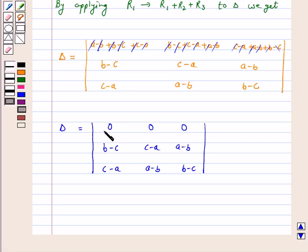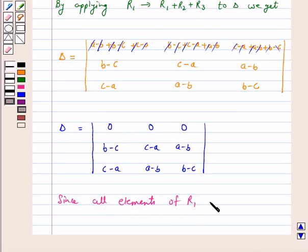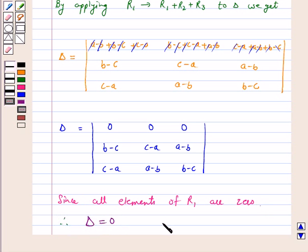Since all elements of R1 are 0, therefore delta is equal to 0. Hence proved — we have proved that our given determinant is equal to 0. I hope the question is clear to you. Bye and have a good day.